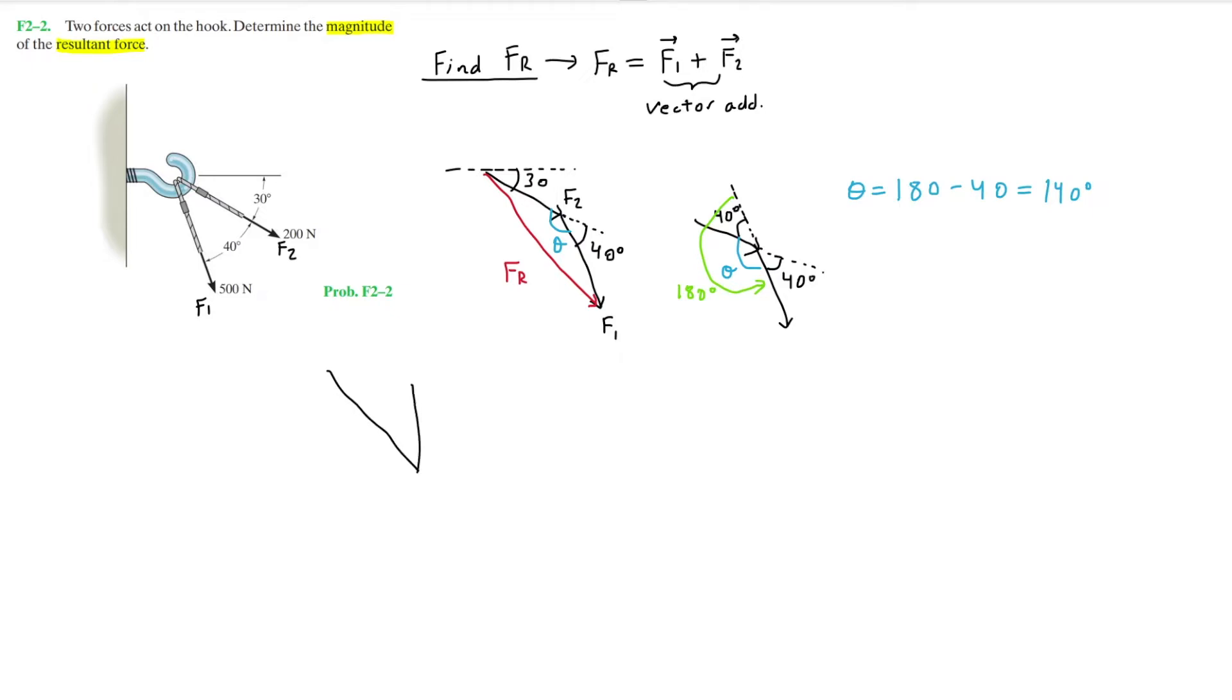Now I'm just going to redraw the triangle once again. So that is 140 degrees. This is Fr. 200 Newtons and the 500 Newtons. And as you can see here, we know two lengths of this triangle and an angle.